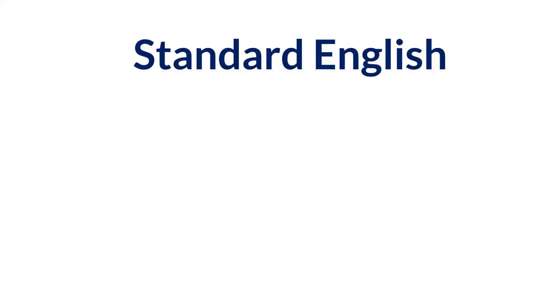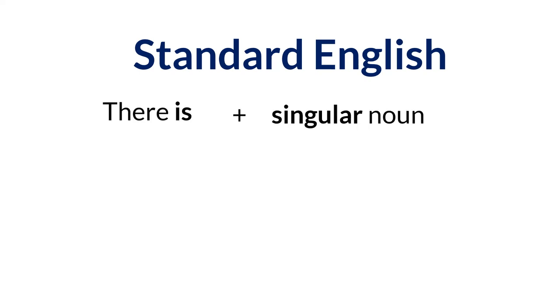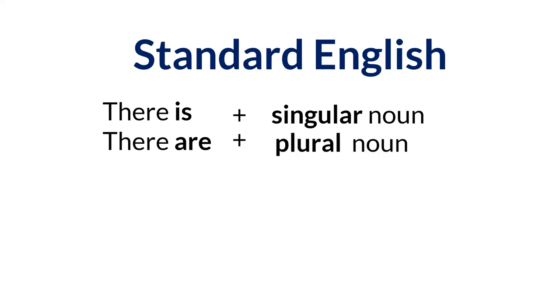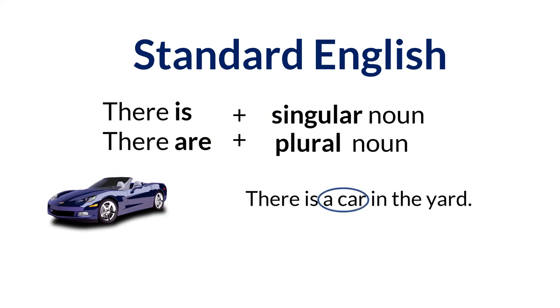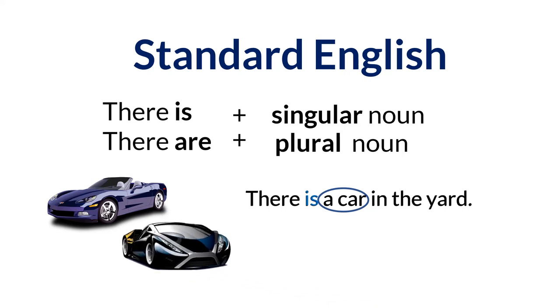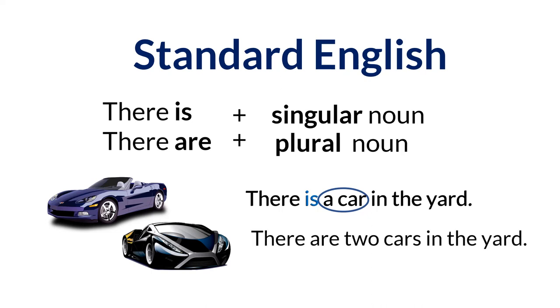Whereas the Creole "it have" remains the same regardless of the noun that follows it, the Standard English versions are a bit different. In Standard English, we use "there is" plus a singular noun and "there are" plus a plural noun. So I would say "there is a car in the yard" — since I am referring to one car, I follow "there" with the verb "is." Of course, if another car pulled up, I would say "there are two cars in the yard," because I am referring to two cars and therefore must use the verb "are."